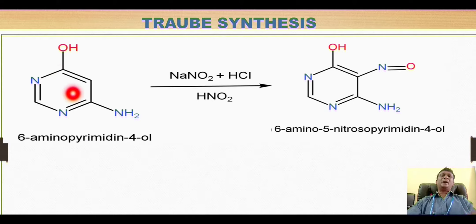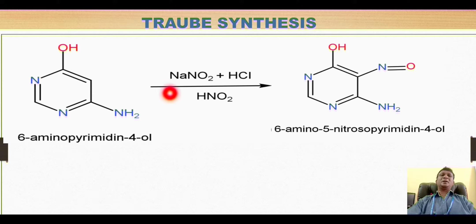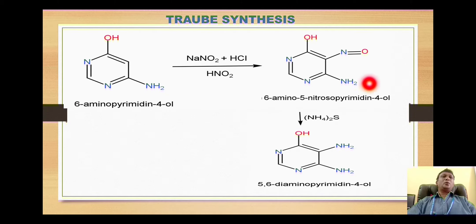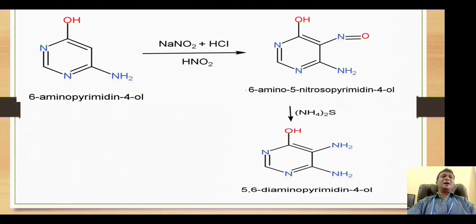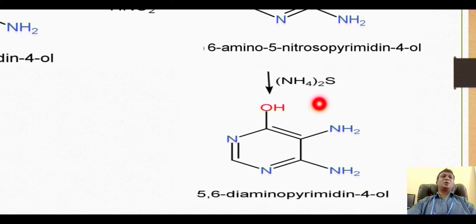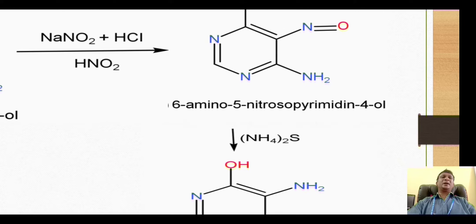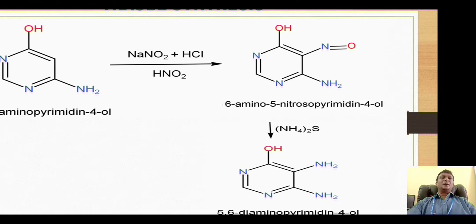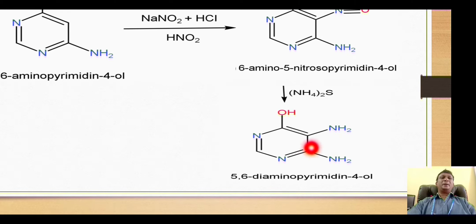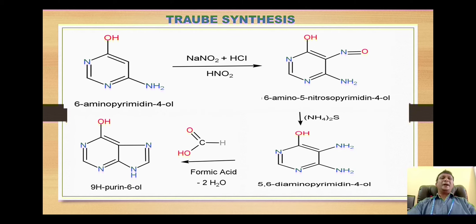The attack is at position 5 because the hydroxyl group is a powerful activating ortho/para director and this is the ortho position. The amino group is also a powerful activating ortho/para director, so this is also the ortho position. The nitrosonium ion, being a weak electrophile, attacks at this 5-position to give the 5-nitrosopyrimidine-4-ol derivative. This nitroso derivative is then reacted with ammonium sulfide (NH₄)₂S, which acts as a reducing agent, reducing the nitroso group to the corresponding amino group.